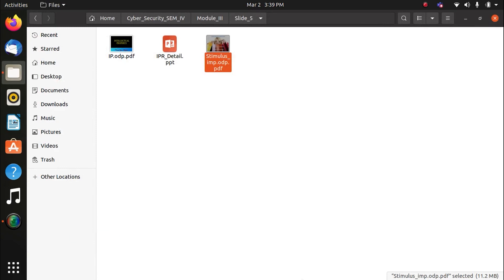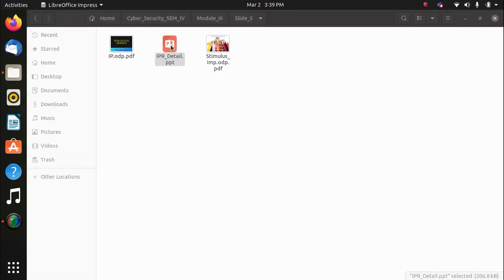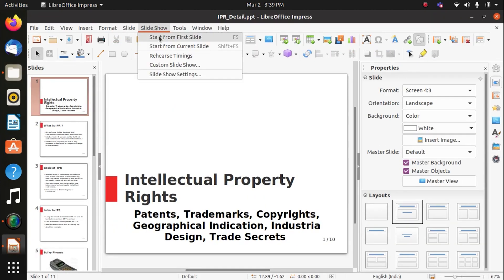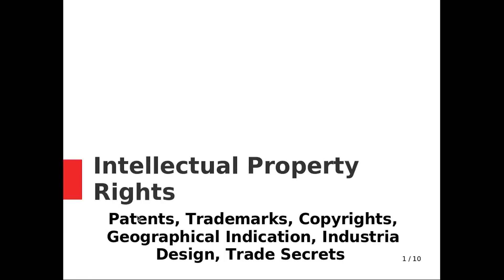So we have completed the topic. We have seen: what is intellectual property, what is patent, what is trademark, what is copyright, what is geographical indication, what is industrial design, and what is trade secret. Thank you.